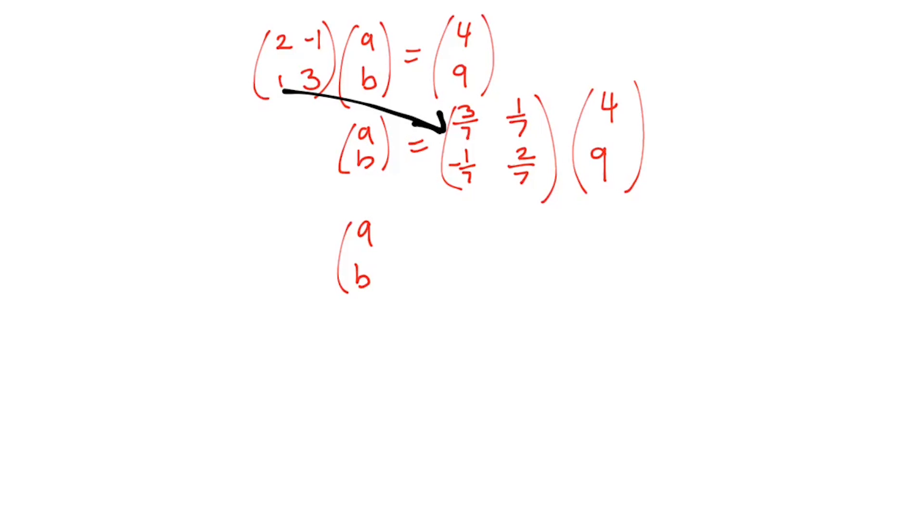And this will give you 3/7 by 4 and 1/7 by 9, first row by first column. So we'll end up with 12/7 plus 9/7. Your matrix multiplication should be in again. Negative 1/7 by 4 is negative 4/7, plus 2/7 by 9 is 18/7.